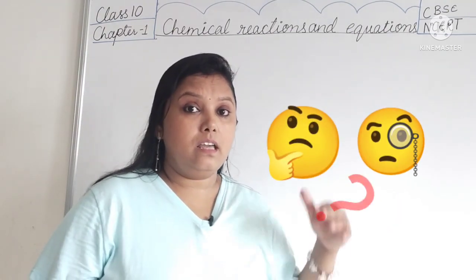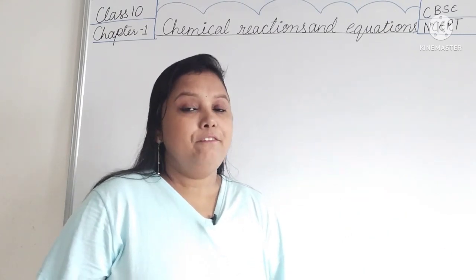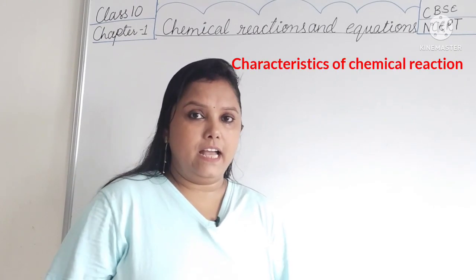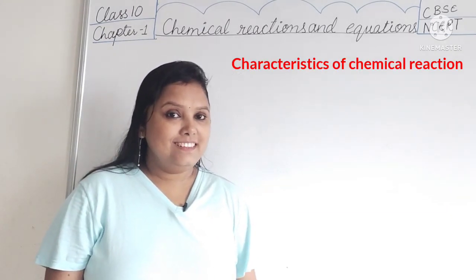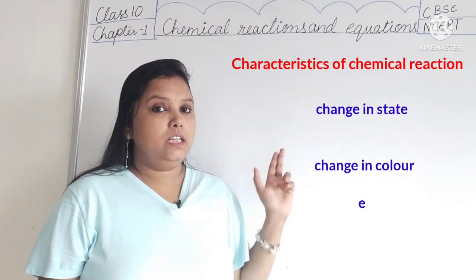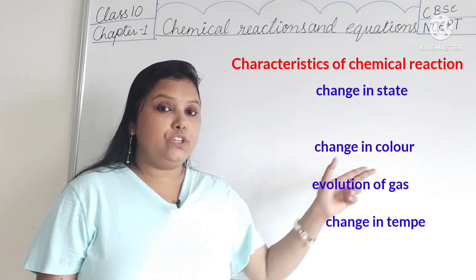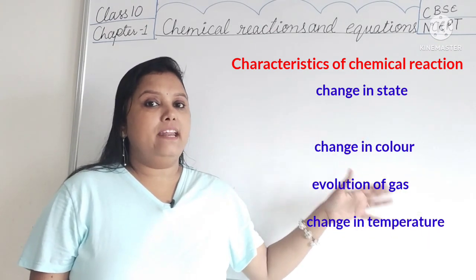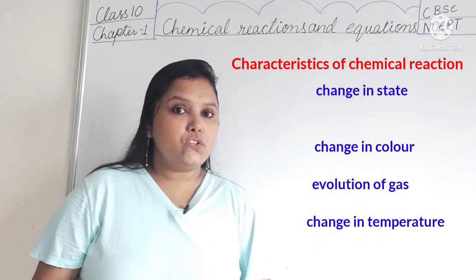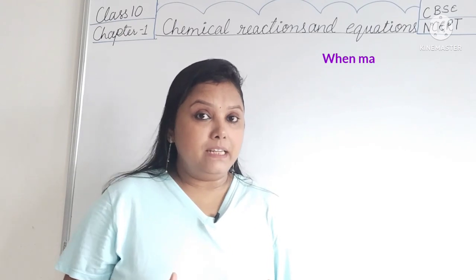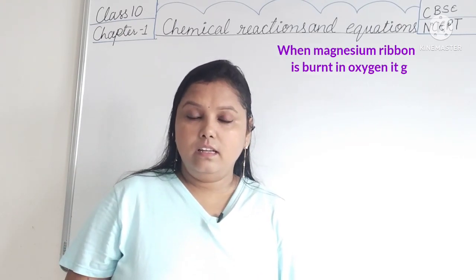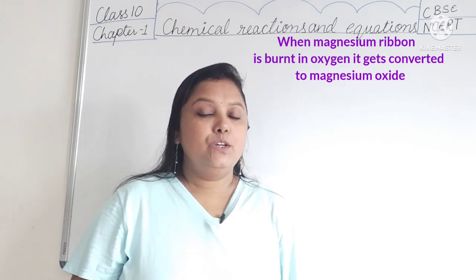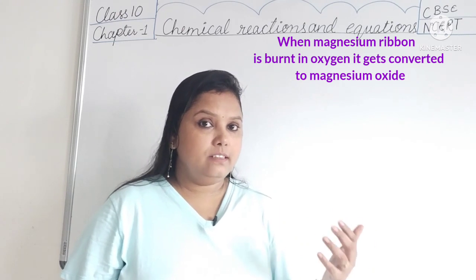But how can we know that a chemical reaction took place? Well there are signs or you can say the characteristics of chemical reactions. So what are these characteristics? Change in state, change in color, evolution of gas, change in temperature. These are the four characteristics or you can say the signs of chemical reactions. When magnesium ribbon is burnt in oxygen, it converted into magnesium oxide. So there is a chemical reaction that is happening here.